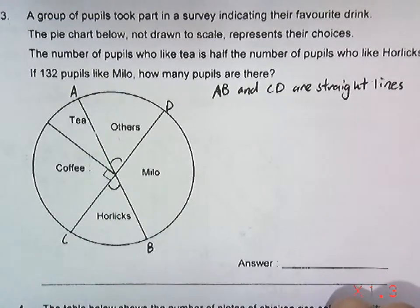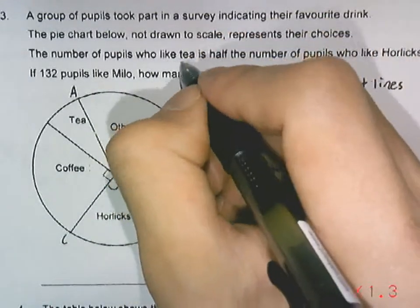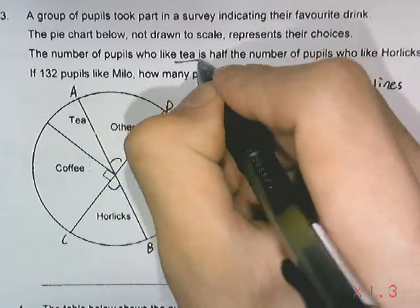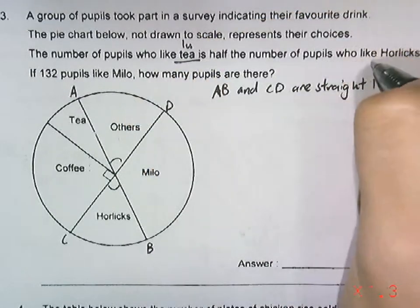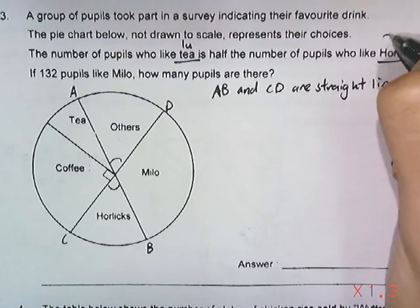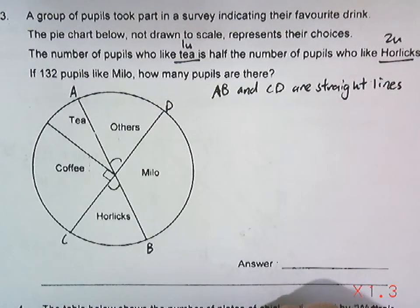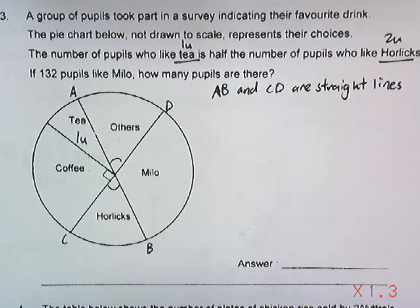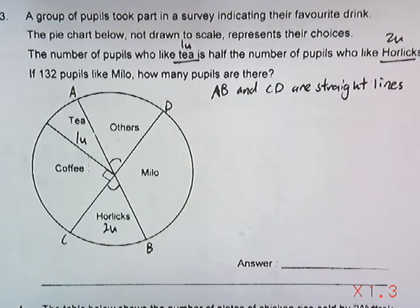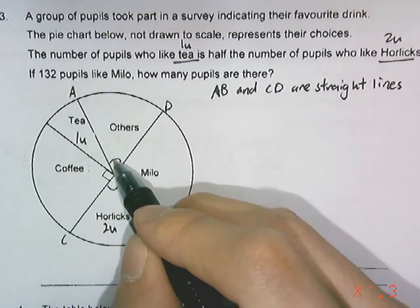The number of students who like tea is half, so this would take one unit. Those who like Horlicks will be two units. I'll put down one unit here for tea and two units for Horlicks.